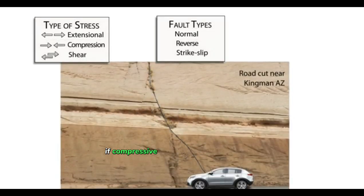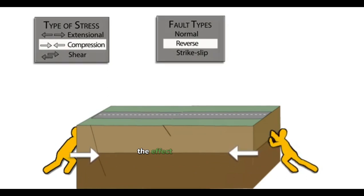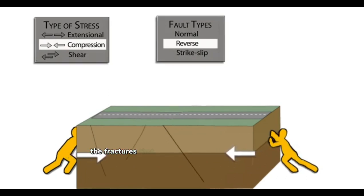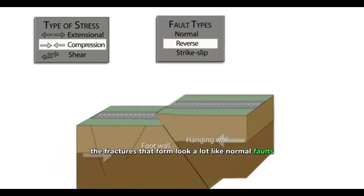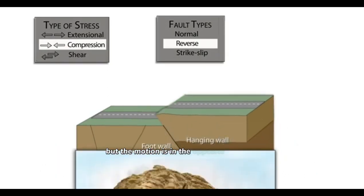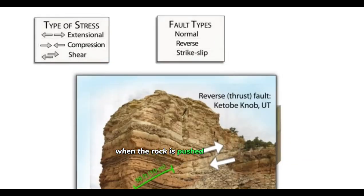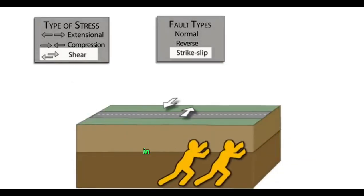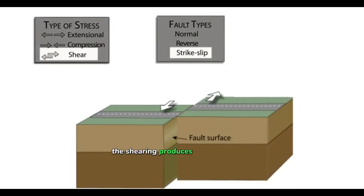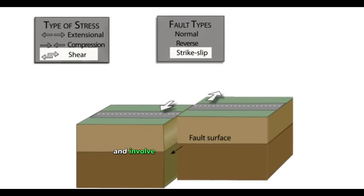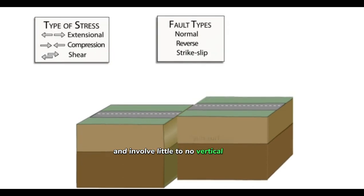If compressive stress is applied to the rock, the effect is to shorten it. The fractures that form look a lot like normal faults, but the motion is in the opposite direction. These are called reverse faults. When the rock is pushed horizontally in opposite directions, the shearing produces strike-slip faults. Most strike-slip faults are close to vertical and involve little to no vertical motion.